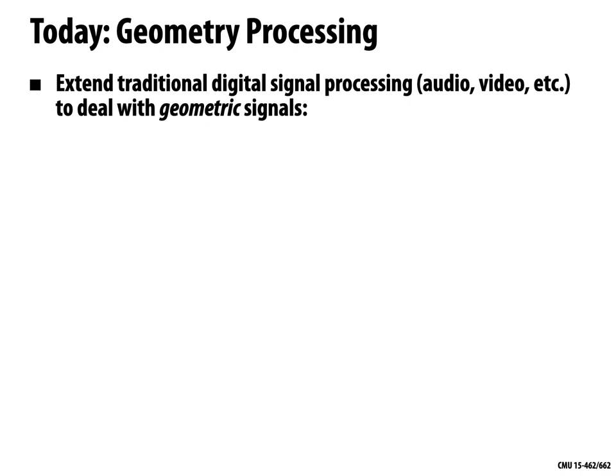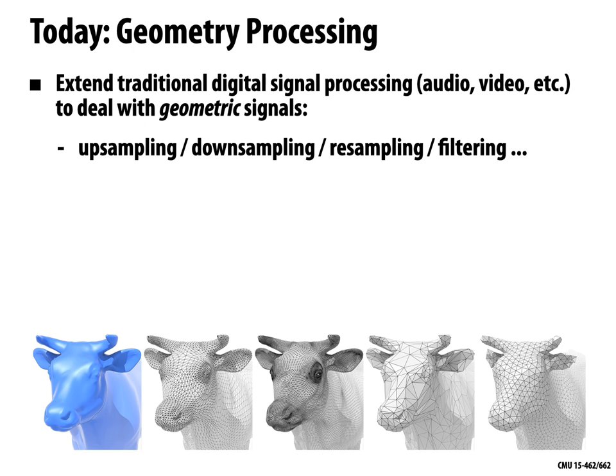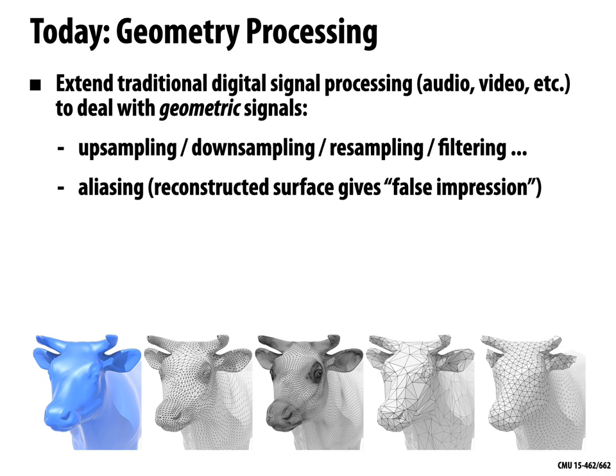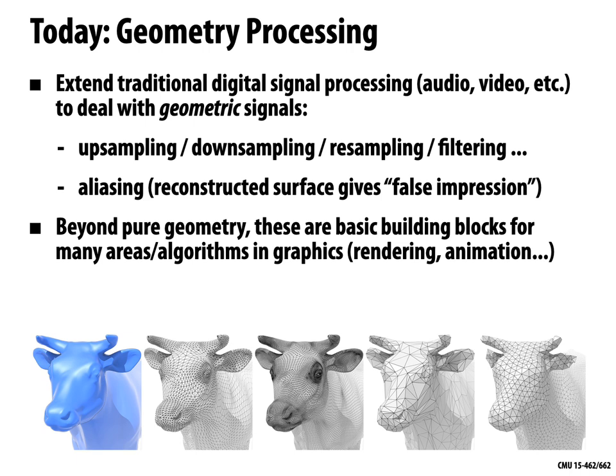This brings us to digital geometry processing, which is kind of the next wave of digital signal processing. Traditionally, digital signal processing looks at images, audio, and video — now we want to generalize it to geometric signals, to shapes. We have many of the same basic challenges: we want to up-sample, down-sample, re-sample, or filter geometry, and we run into problems of aliasing.